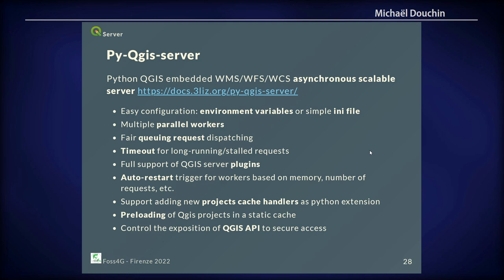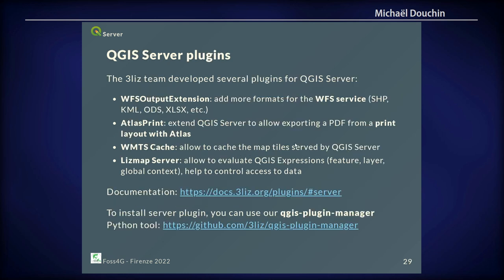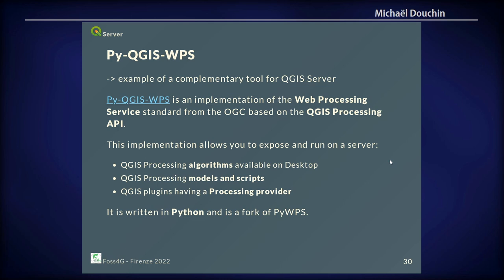We also develop plugins: one to extend the formats of the WFS GetFeature request, and one to print Atlas, which was not possible in older QGIS versions but is now possible using GetPrint directly. We also developed a tool called PyQGIS WPS to extend QGIS Server capabilities and use processing algorithms in QGIS, publishing them via WPS protocol. You can ask the server to create a buffer, print something, run queries — whatever you can do in the QGIS Processing Toolbox, you can do with PyQGIS WPS.